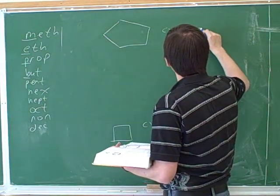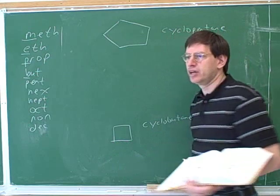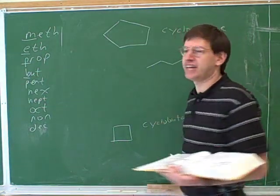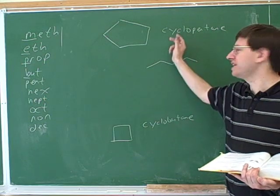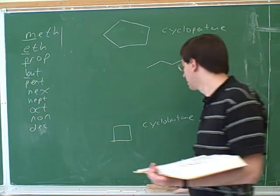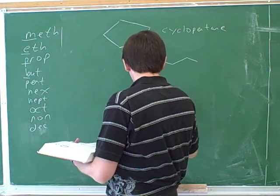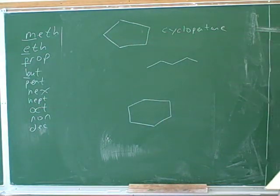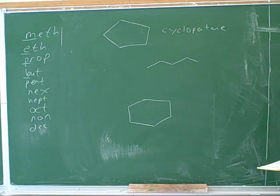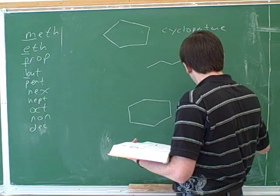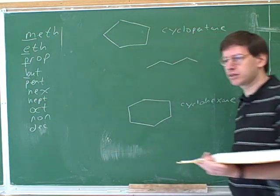Cyclo because it's a ring, and pentane because there's five carbons. We can't just call it pentane because this is pentane. This is pentane. And what's the name of this? I mean, cyclohexane. Cyclopentane. Cyclopentane. Okay. Good.